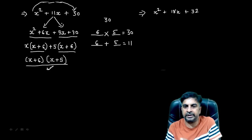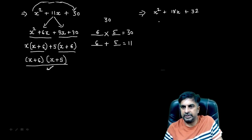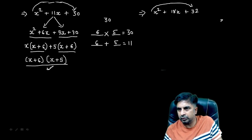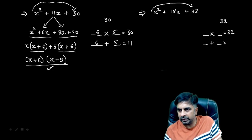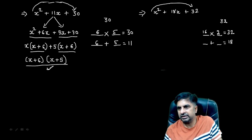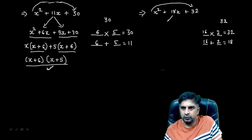Let me explain this one more time with another example. You need to multiply the coefficient of x² and the last term: 1 × 32 = 32. You need to find factors of 32 such that the product remains 32 but the addition equals 18. Now, 8 × 4 = 32 but 8 + 4 = 12, which is not 18. However, 16 × 2 = 32 and 16 + 2 = 18.